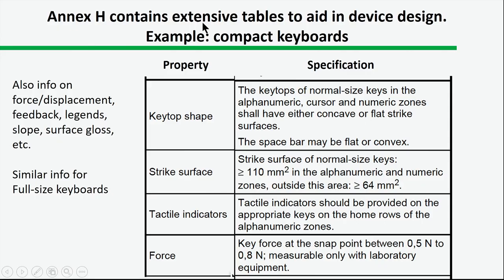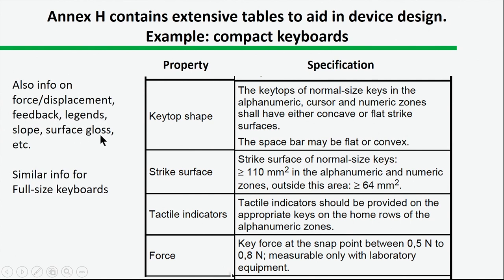Appendix H has a large number of tables for device design. These are extremely detailed. For compact keyboards, the table shows things like key top shape and strike surface — for example, the strike surface shall be greater than or equal to 110 mm². For keyboard force, the force at the snap point should be between 0.5 and 0.8 Newtons. There's similar information for full-size keyboards, covering force-displacement, feedback, legend, slope, and surface gloss — about 15 to 20 items in the list.